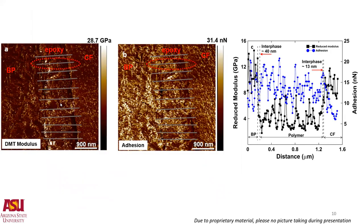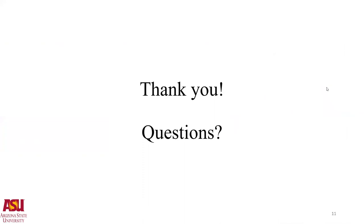When we look at the Bucky paper itself and its interface with epoxy — unlike the carbon fiber — we can only use DMT modulus as the parameter to study the interface. The interface is much larger, around 40 nanometers, compared to the carbon fiber/epoxy interface of 13 nanometers. Thank you very much for this opportunity. I would be more than happy to take questions.